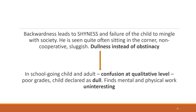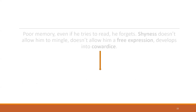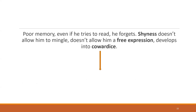In school-going children and adults, the dullness is seen at the qualitative level. He's not able to perform well in school, not able to answer properly when the teacher asks questions, and finds all the work uninteresting. Poor memory — even if he tries to read, he forgets. Shyness doesn't allow him to mingle or have free expression, and it develops into cowardice.